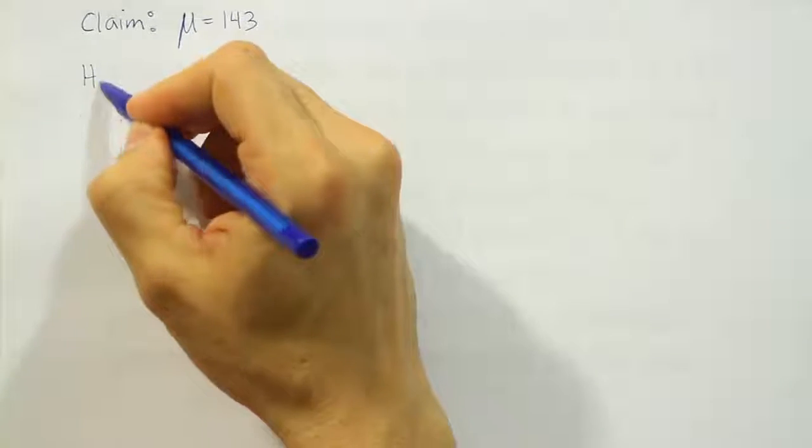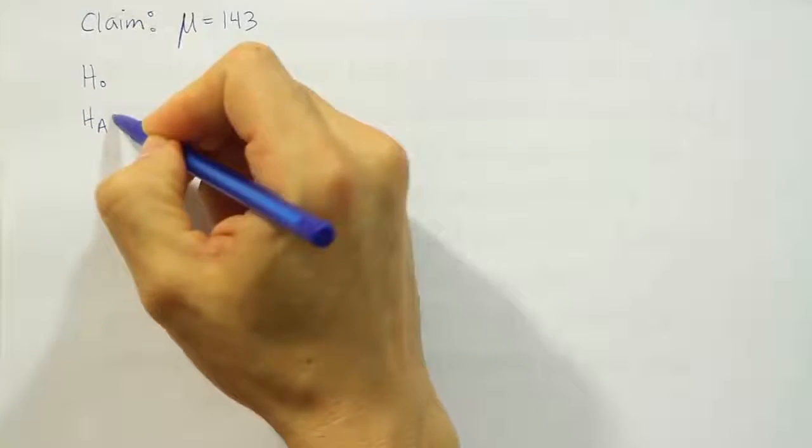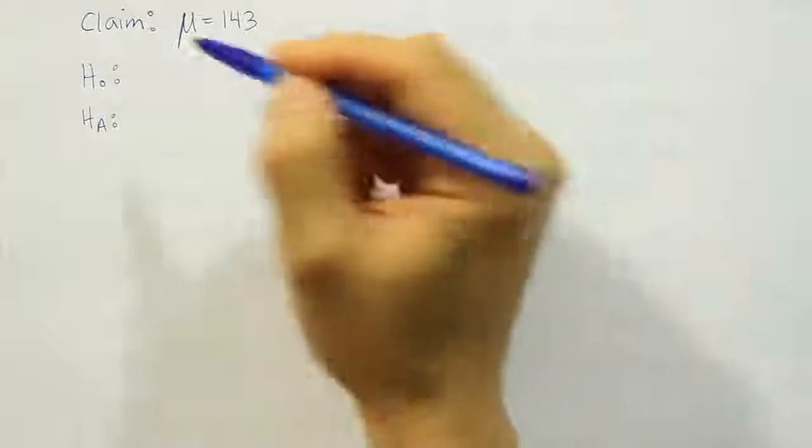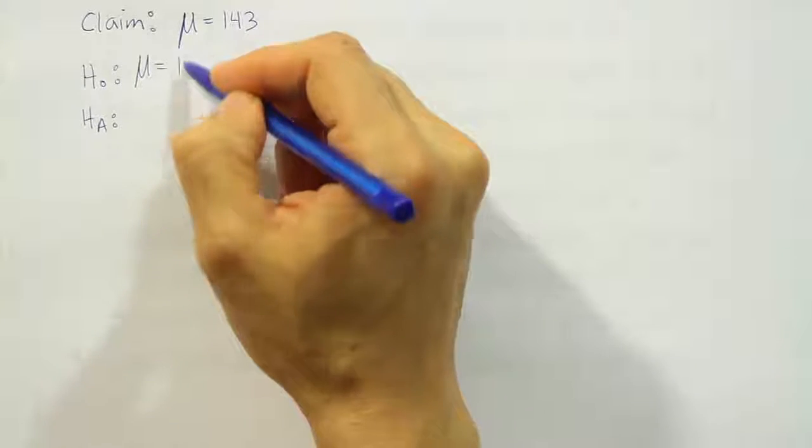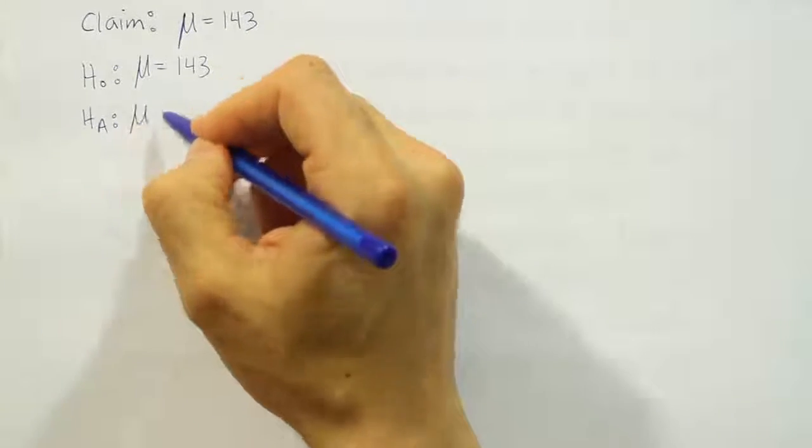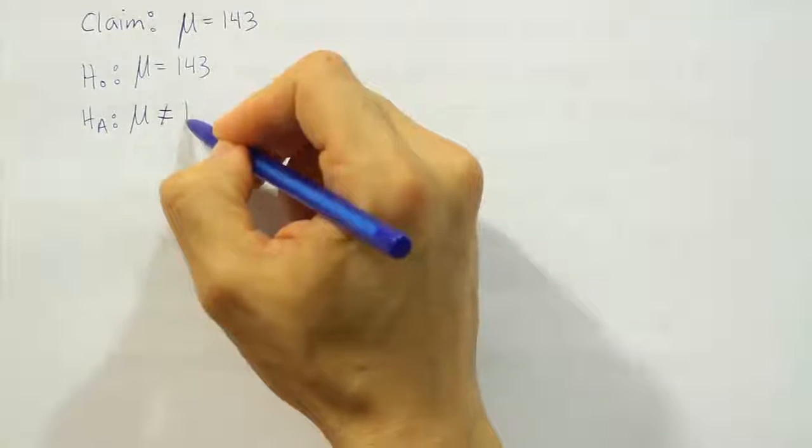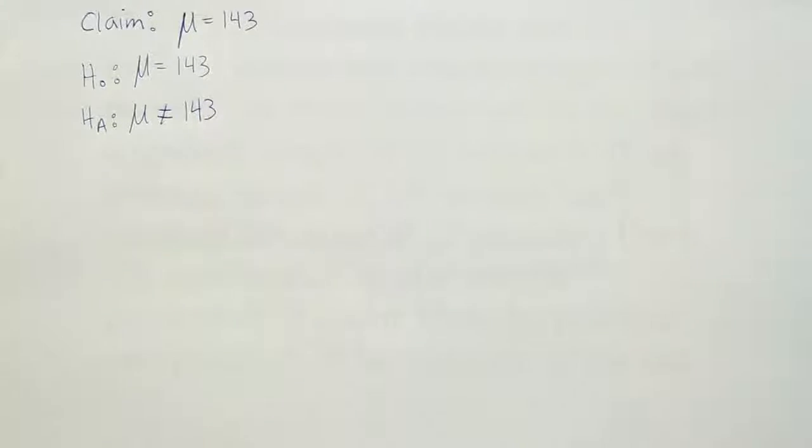From there, we also need to come up with the H0 and the HA ourselves. The calculator cannot do that for us. So since the claim has an equal to sign, we'll let that be H0. And then HA is going to be the opposite of that or not equal to in this case.